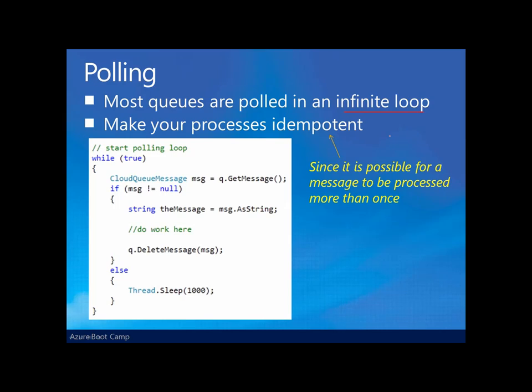You want to make sure that your process is what you call idempotent. Because a message might be pulled off the queue with getMessage but then eventually time out, we can have a situation whereby multiple processes might have grabbed the same message. So we want to make sure that the activity of those processes working on that message is always going to be the same no matter how many times we process that message. We want to make our application code idempotent with regard to dealing with those messages.